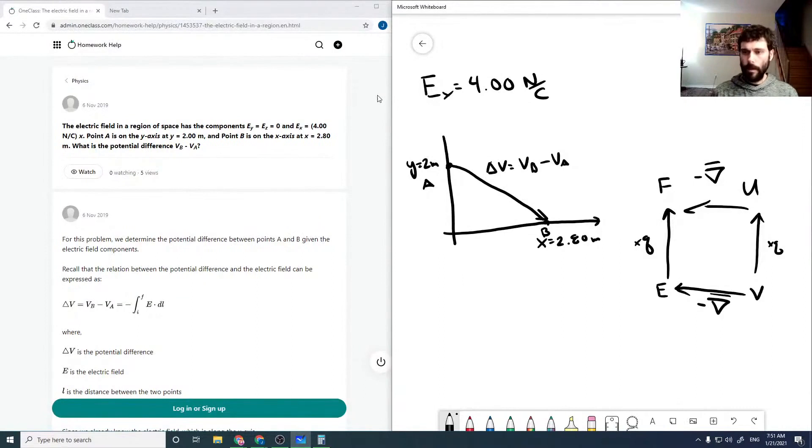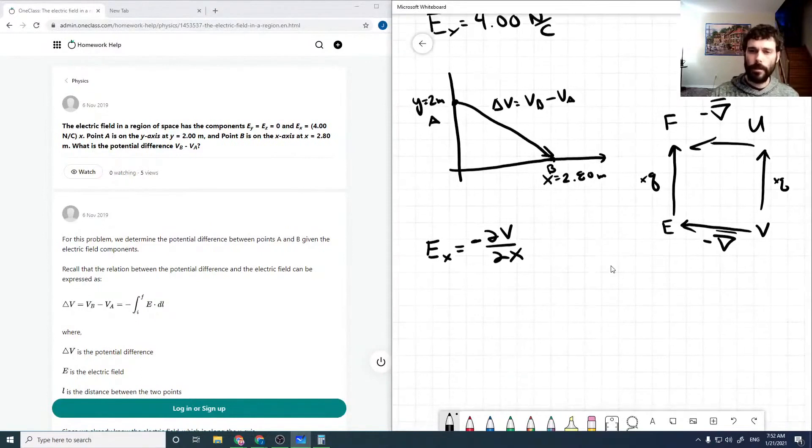So our E_X is minus dV by dX. So we can solve for potential at A and B, which will have with it some constant of integration, but those will cancel.